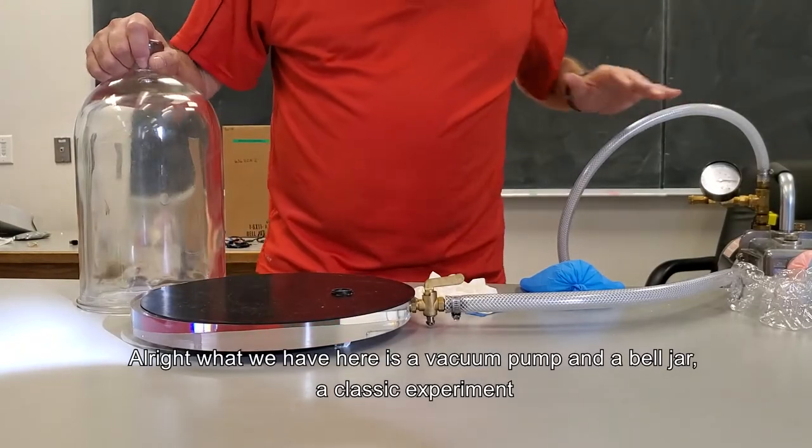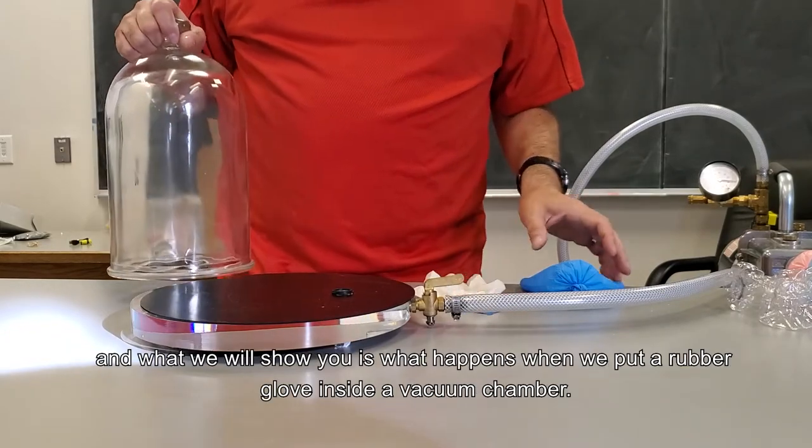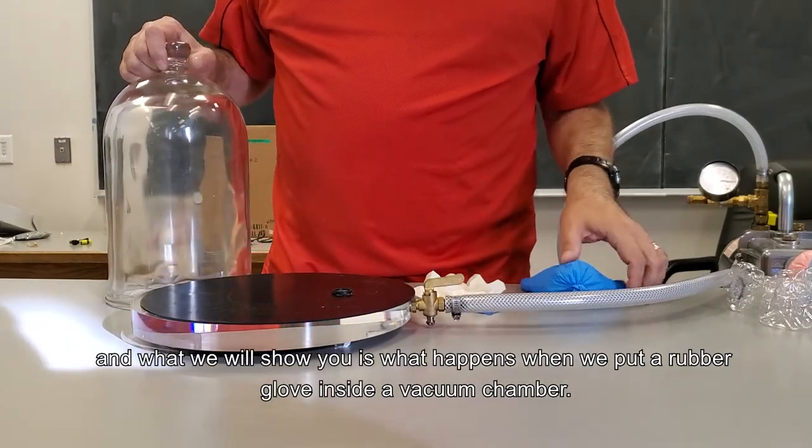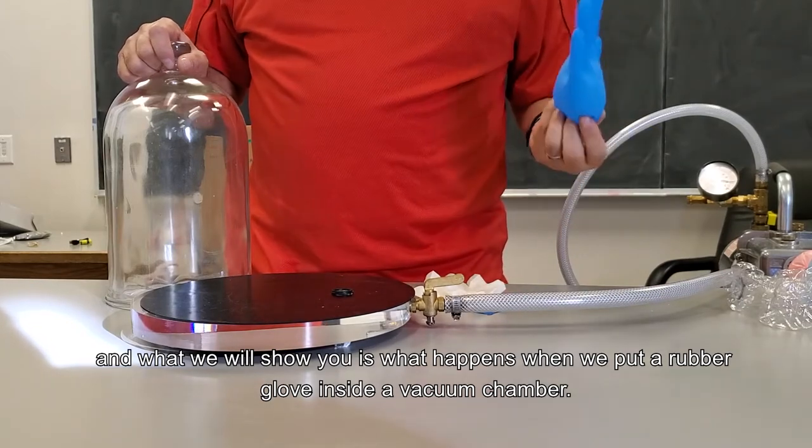Alright, what we have here is a vacuum pump and a bell jar, a classic experiment. What I'm going to show you is what happens when we put a rubber glove inside a vacuum chamber.